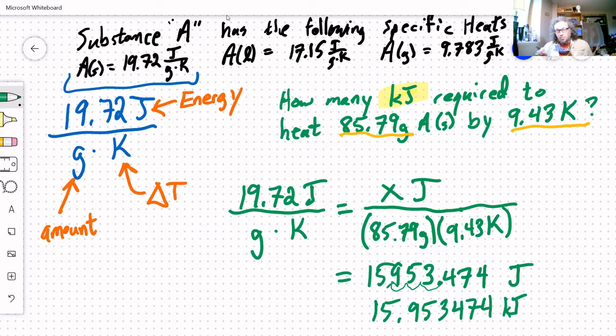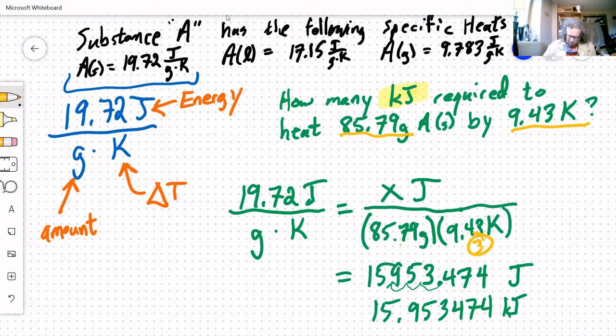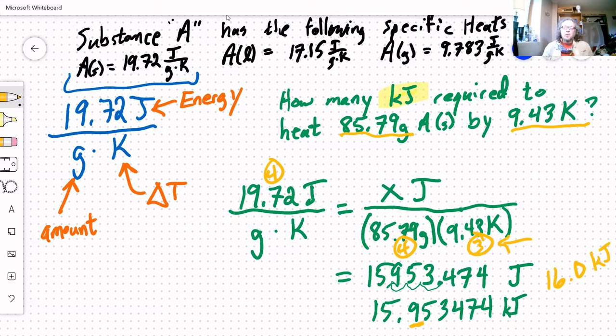The other reason this isn't done yet is we still have to round to an appropriate number of significant figures. Looking back at the problem, it's all multiplication and division. I've got three, got four, got four sig figs. My answer should have the same number of significant figures as the lowest number of sig figs coming in. So in this case, that's three from the 9.43 Kelvins, which means that I want to round to that decimal place, which looks like it's going to give me 16.0 kilojoules. So there's my heat capacity problem.